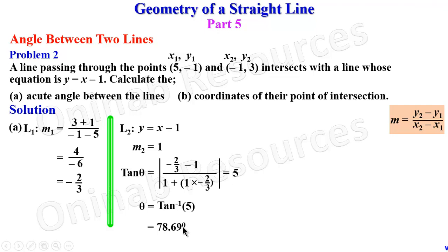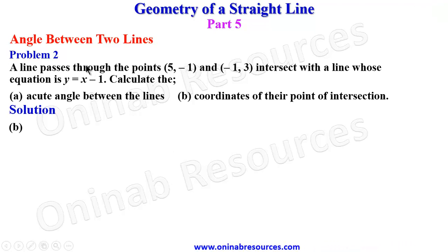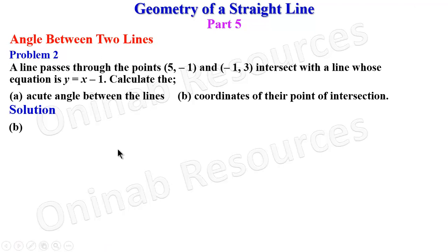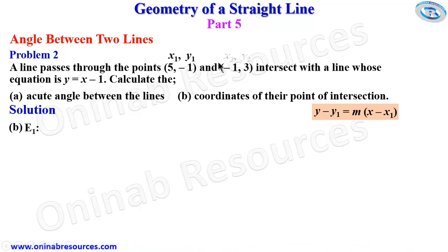So theta equals tan inverse of 5, which gives 78.69 degrees. That's all for problem 2a. For part 2b, we need to find the coordinates of the point of intersection. We need to get the equation of the first line — having done that, we solve simultaneously with the second line to get the coordinates. We already have the gradient and can choose any point from the given points.